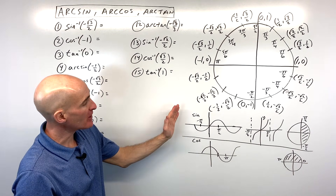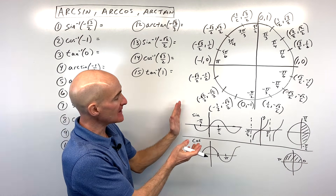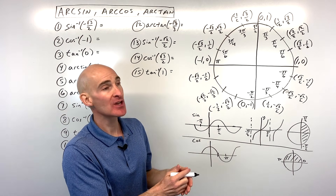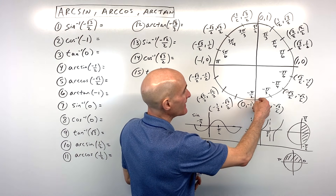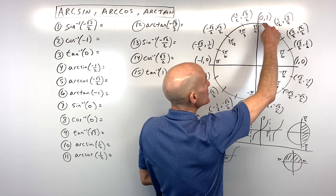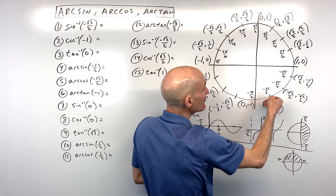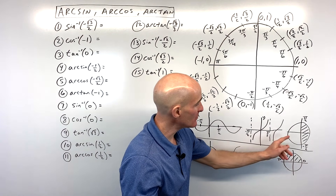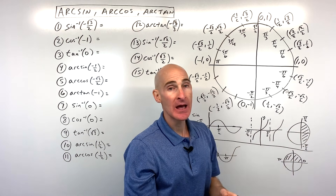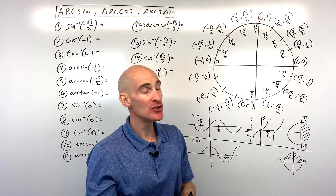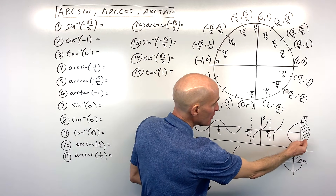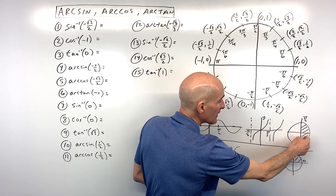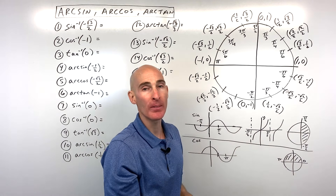The first thing I want to talk about is when you're finding the sine inverse and the tangent inverse, you want to make sure that you find the angle between negative pi over two and positive pi over two. So it's going to be in these two quadrants. If you end up in the fourth quadrant, you don't want to go all the way around — just make it a negative angle.